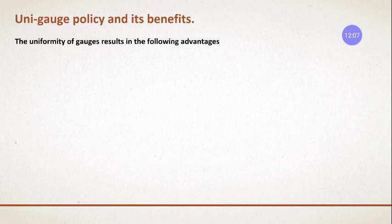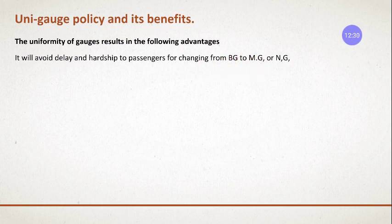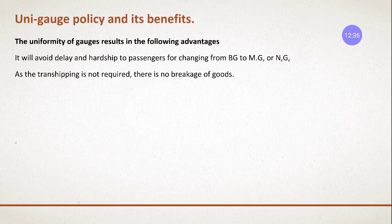If we adopt the unigage policy, the advantages are: first, it avoids the delays and hardships for passengers who previously had to change from broad gauge to meter gauge or narrow gauge. Passengers no longer need to get down from the train, cross the footbridge, go to another platform, and board a different train. That hardship is completely avoided.